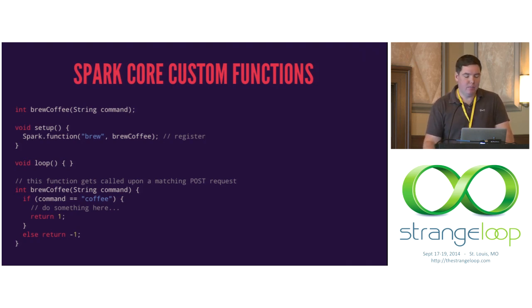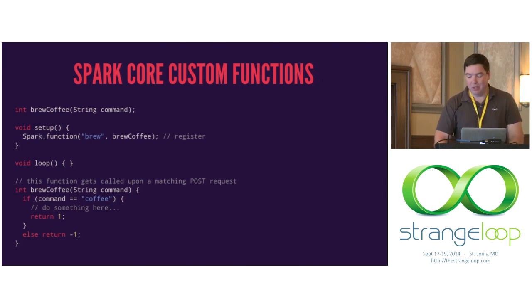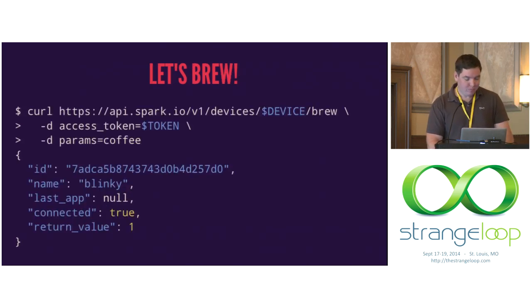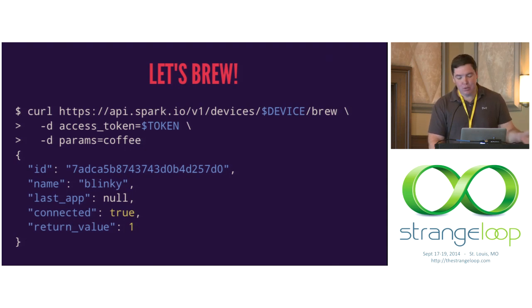If you know for sure you want to do Wi-Fi and you want it to be really standalone, this is the way to go. Here's calling the method — just call slash brew like you'd expect, and you get the return value back. Really, really cool.